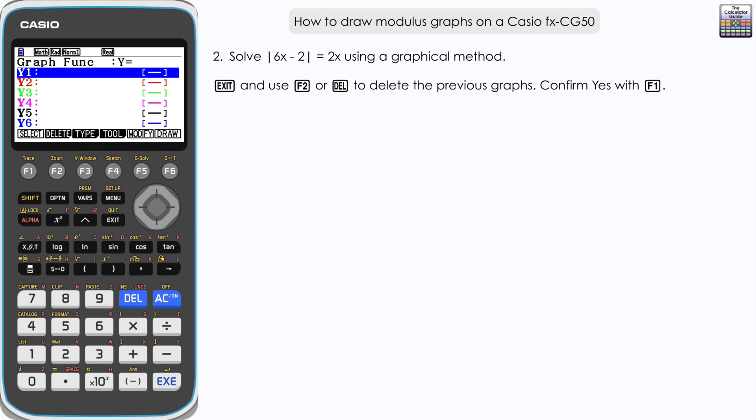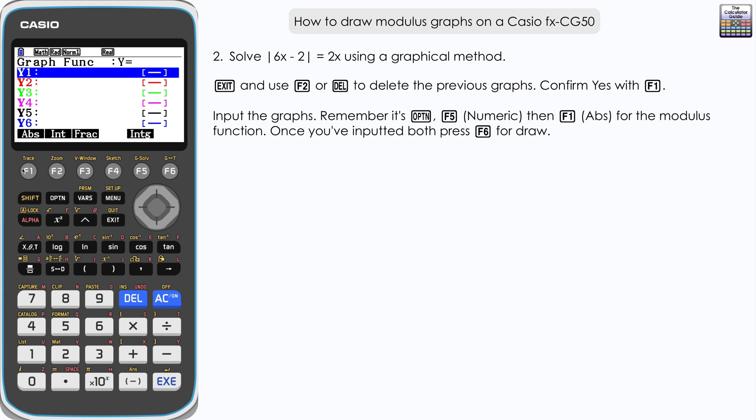Let's input our new graphs. Remember it's option F5 numeric, F1 ABS, 6x minus 2 as our first graph. Navigate down to Y2, that's going to be 2x, just 2x, no modulus function this time. Execute and then F6 to draw.